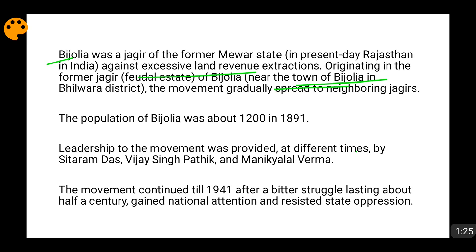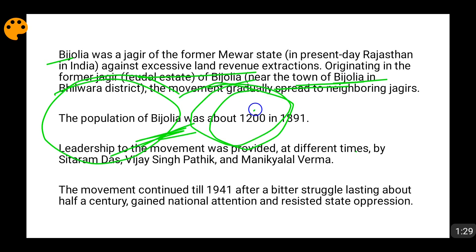At that time, the population of Bijouliya town was around 1,200 in 1891. Leadership of the Bijouliya movement was given by different people at different times. Initially it was by Sadhu Sitaram Das. Then in the second phase, Vijay Singh Pathik and Manika Lal Verma were the leaders. In the third phase, some more leaders came, but they were not very well known among the peasants.